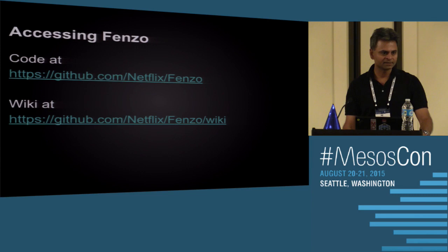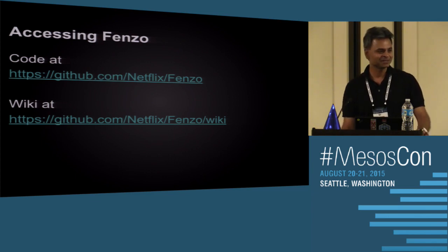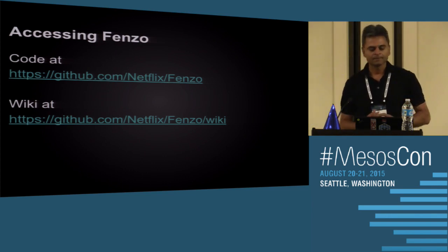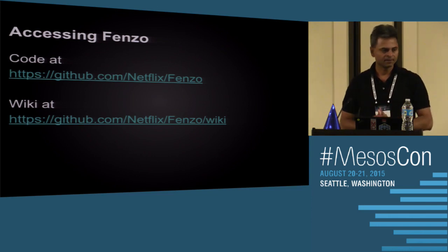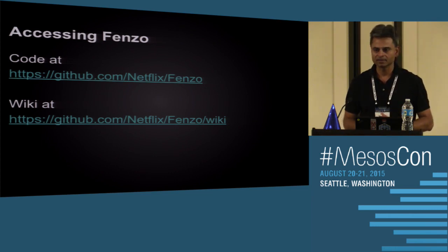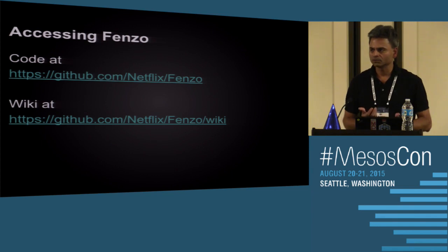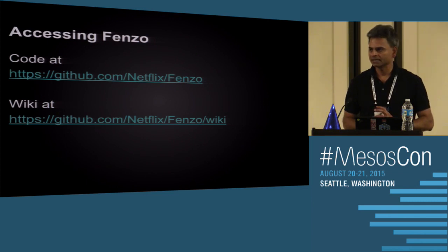FENZO is available on Netflix GitHub — it will be available today a few minutes after this talk. We have a wiki with good documentation to get started. We've talked to a few people as a preview and believe FENZO can be used by almost any framework that wants scheduling optimizations, whether in a cloud or data center.